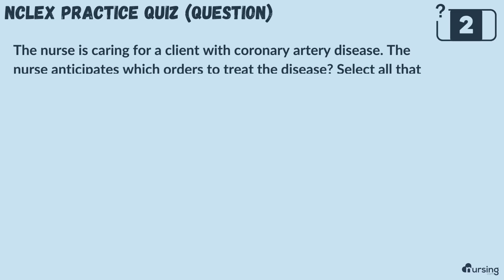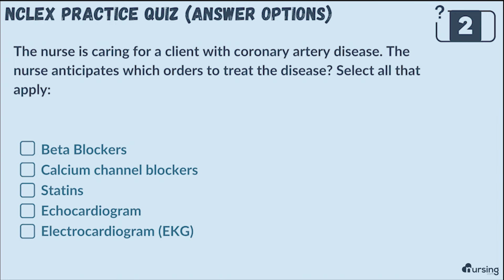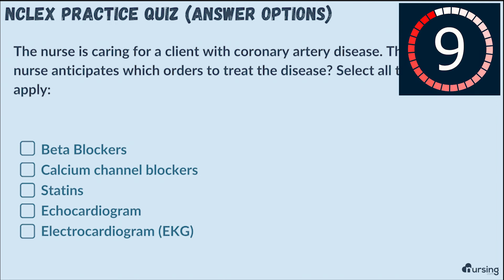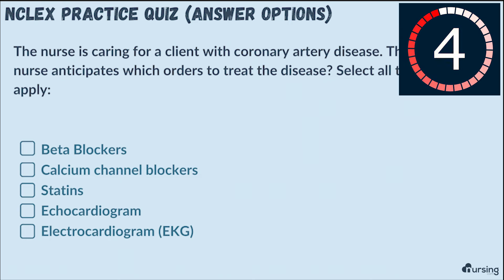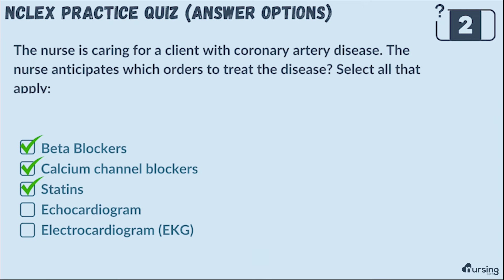The nurse is caring for a client with coronary artery disease. The nurse anticipates which orders to treat the disease — select all that apply. Is it beta blockers, calcium channel blockers, statins, echocardiogram, or electrocardiogram (EKG)? The correct answers are beta blockers, calcium channel blockers, and statins.